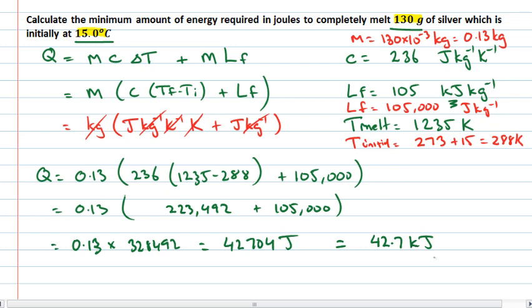We should always check if this is reasonable. We've already done a units check. Usually the energy associated with a phase change is much larger than the energy required to change the temperature — that's typical with water. However, with this metal, since its melting point is so much larger, it's not surprising that the energy required to heat it up to the melting point is large and actually dominates here compared to the energy of transformation.